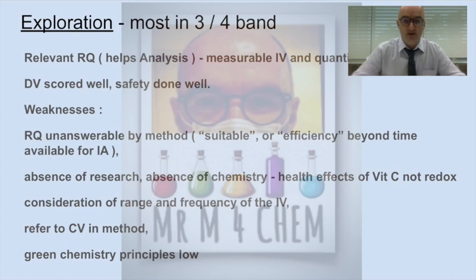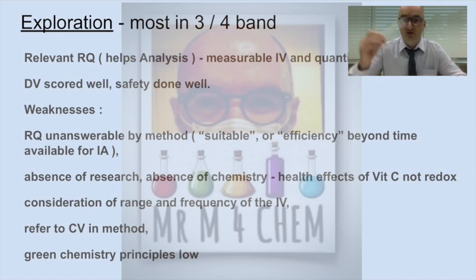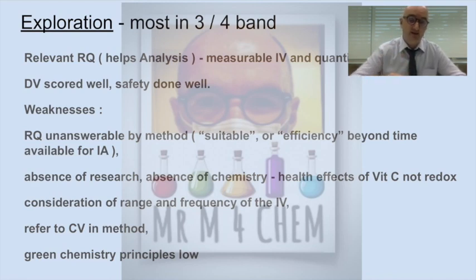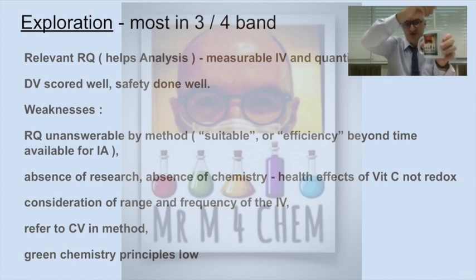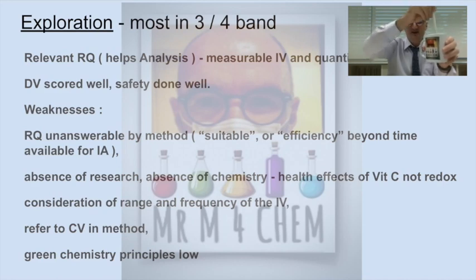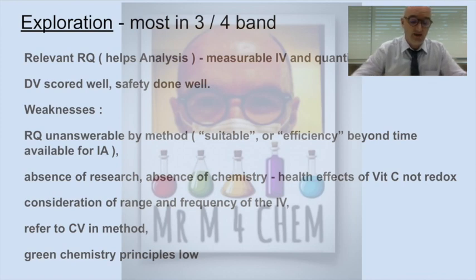A massive issue: a student might say they're going to look at the effect of concentration on rate of reaction, and one of their control variables they'll put temperature. But in your method, if it doesn't say how you're going to control that temperature, then you're not going to score more than three, maybe four on exploration. If you say you have a control variable, you need to state how you're going to control it in the method. And even with temperature — a classic example — they'll put the thermometer into the water bath around the reaction, not in the reaction itself. If they put it in the reaction, they've introduced a systematic error. So be very careful: if you want more than three or four, you must discuss your control variable in your method.